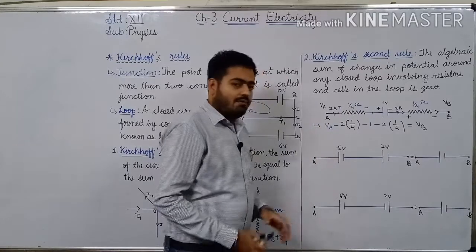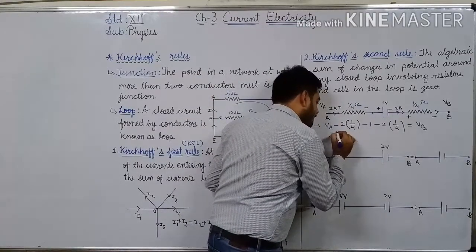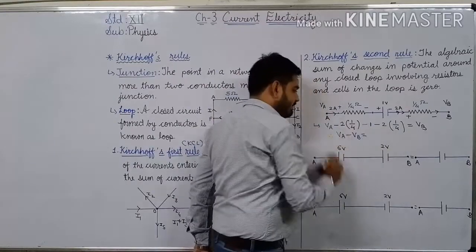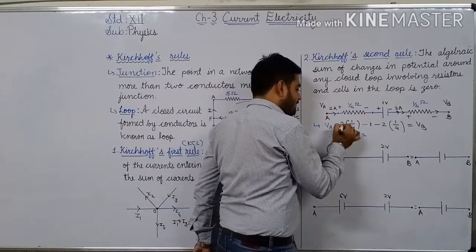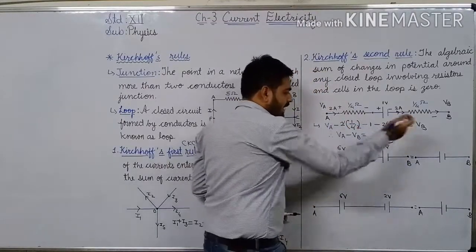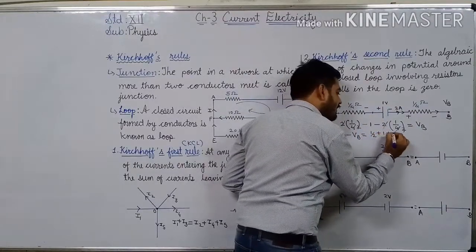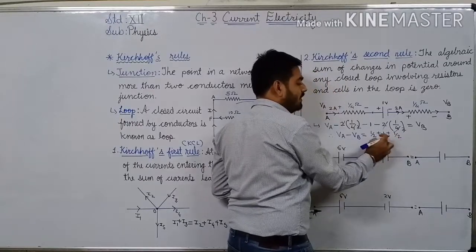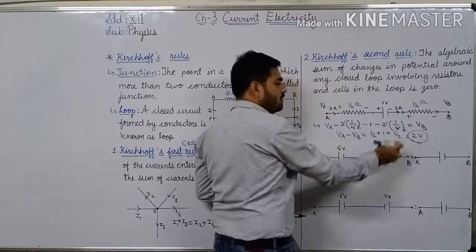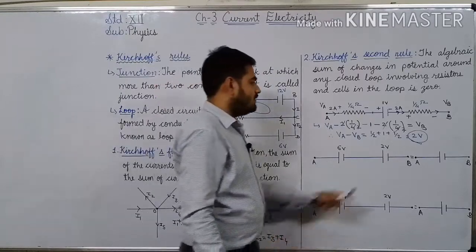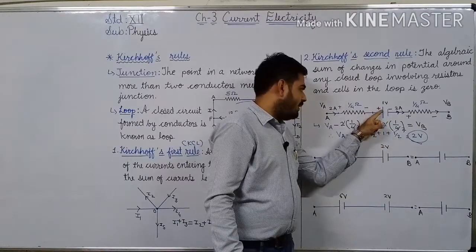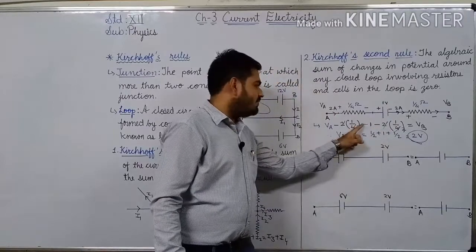So, VA minus VB is equal to 2 × (1/4) + 1 + 2 × (1/4), giving the potential difference between A and B as 2 volt. If the battery polarity were changed — negative where positive was and positive where negative was — then instead of minus 1 we would get plus 1. If it were a 2 volt battery with reversed polarity, we would get plus 2.